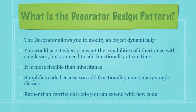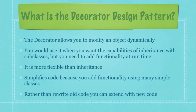So what is the decorator design pattern? The decorator allows you to modify an object dynamically. You would use this pattern when you want the capabilities of inheritance with subclasses, but you need to add functionality at runtime — you want this thing to be dynamic. It is more flexible than inheritance, and it simplifies your code because you add functionality using many simple classes rather than trying to do all this through inheritance. And rather than rewrite old code, using the decorator design pattern you extend with brand new code and keep everything the way that it was.